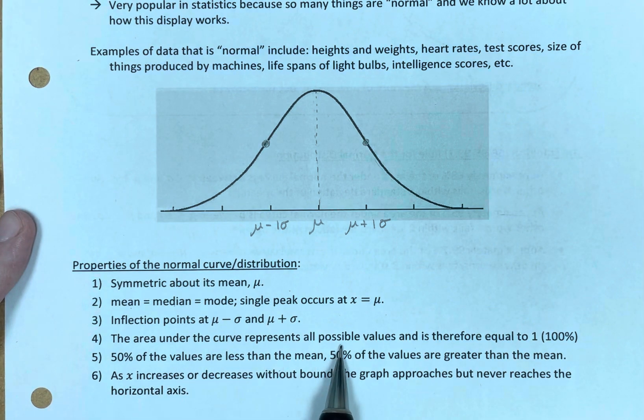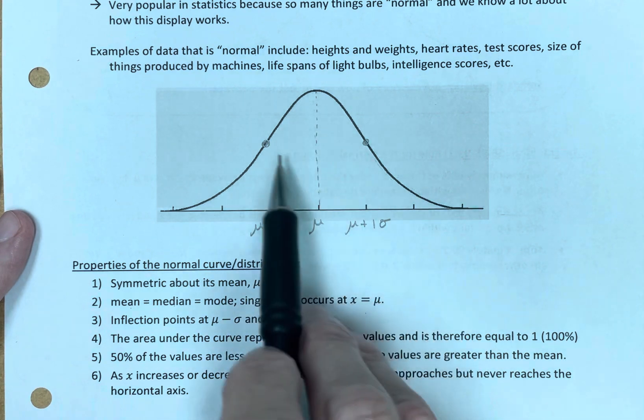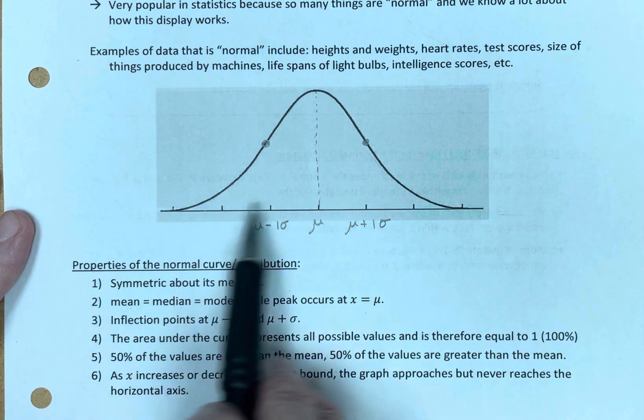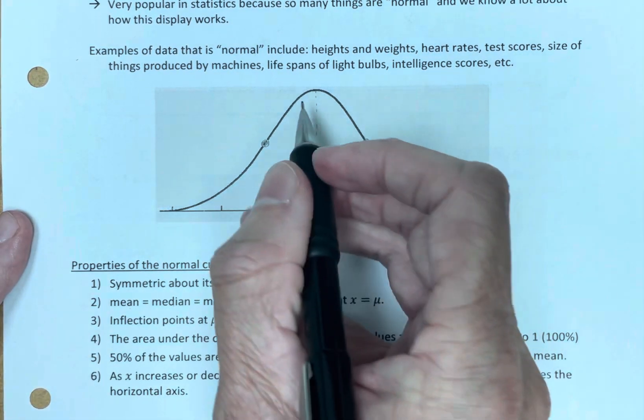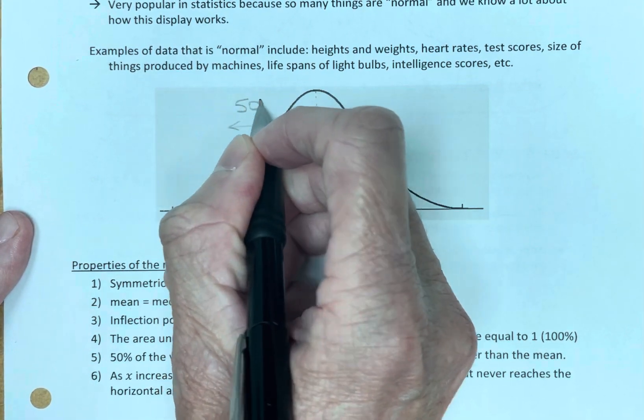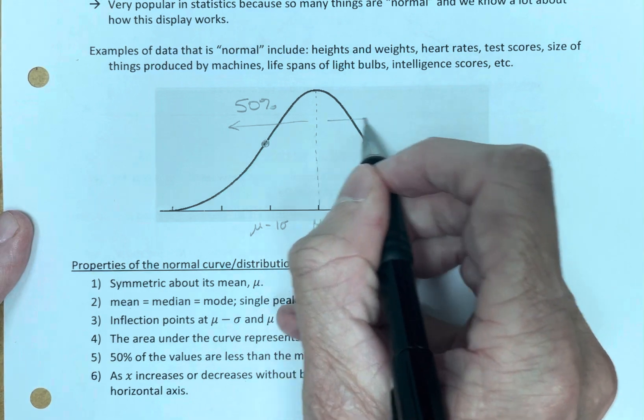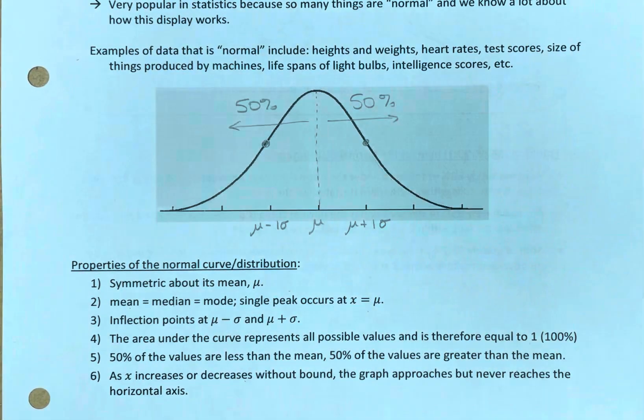The area under the curve represents everything. So, under the area is all 100%. All the data is under the curve. So, it's equal to 1 in probability, or 100% as a percent. Because it's symmetric, 50% of the values are less than the mean. So, going this way, we'll have 50% of the values, and 50% of the values are greater than the mean. It is, after all, symmetrical.